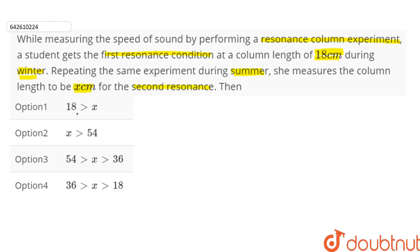Then option one says x is less than 18, option two says x is greater than 54, option three says x is greater than 36 but less than 54, option four says x is greater than 18 but less than 36.